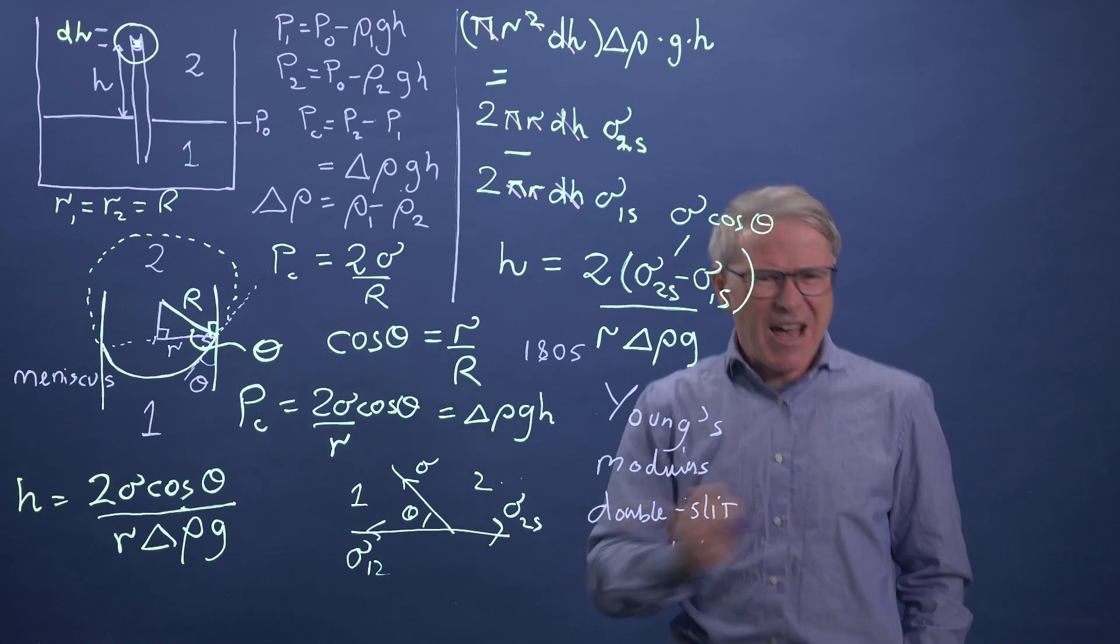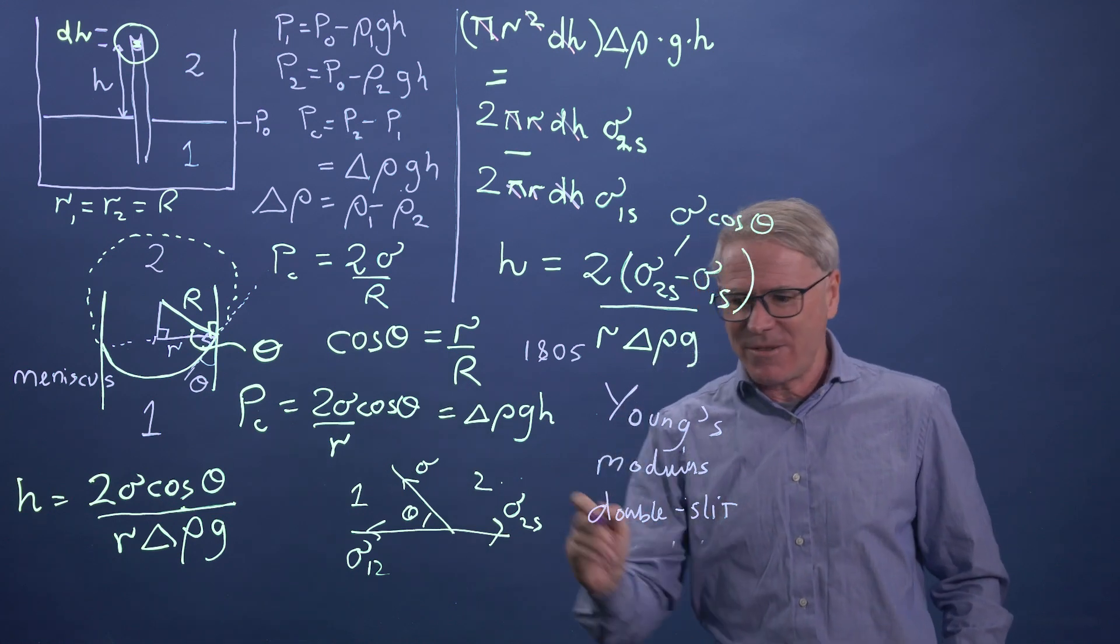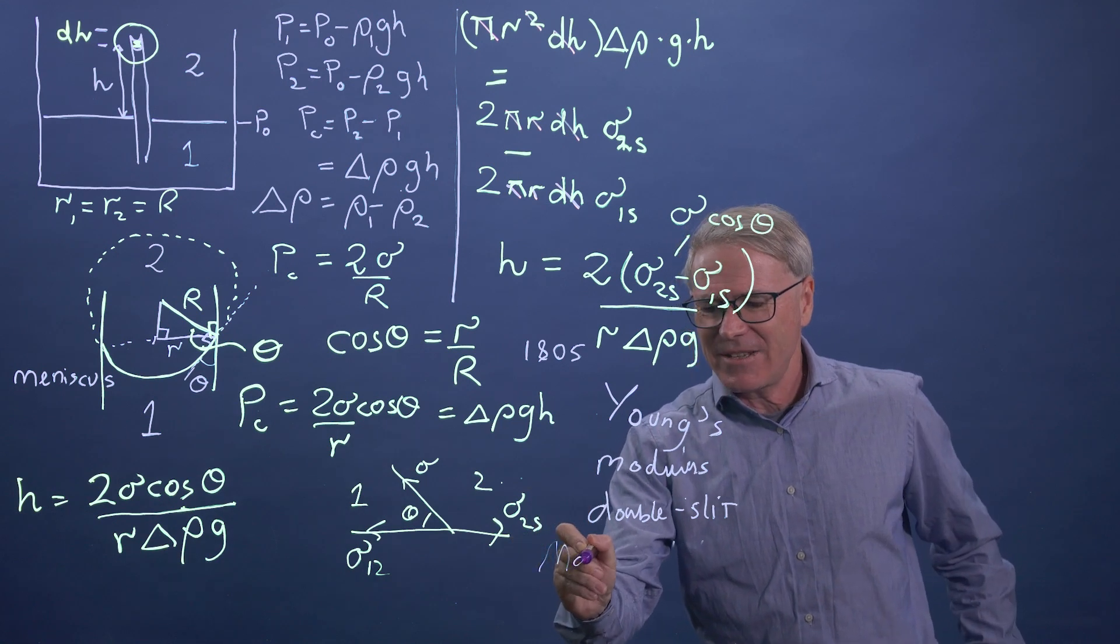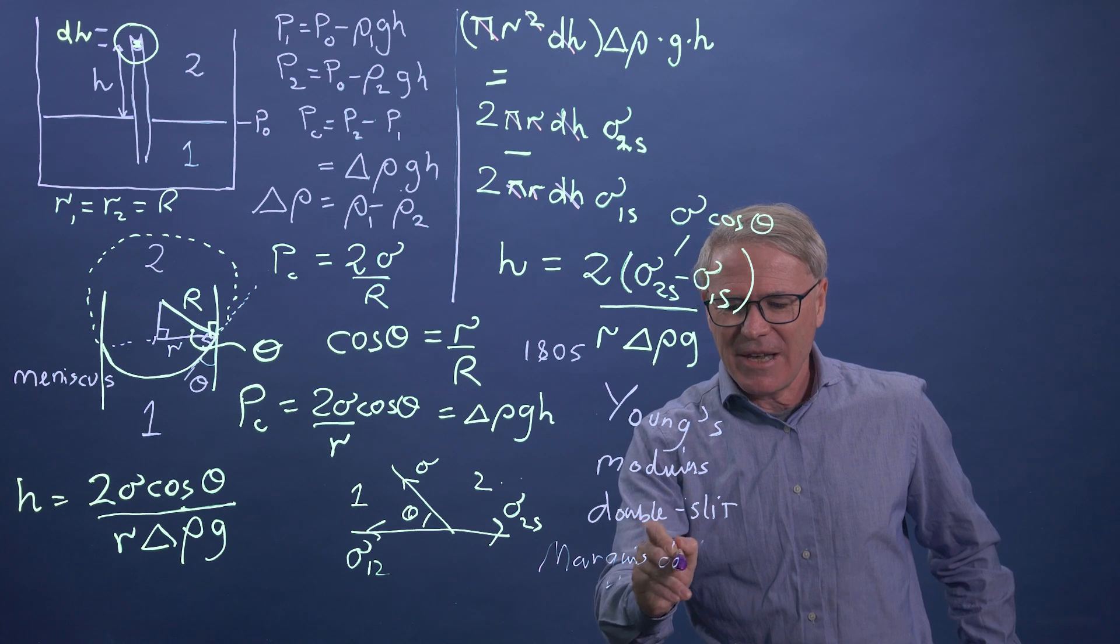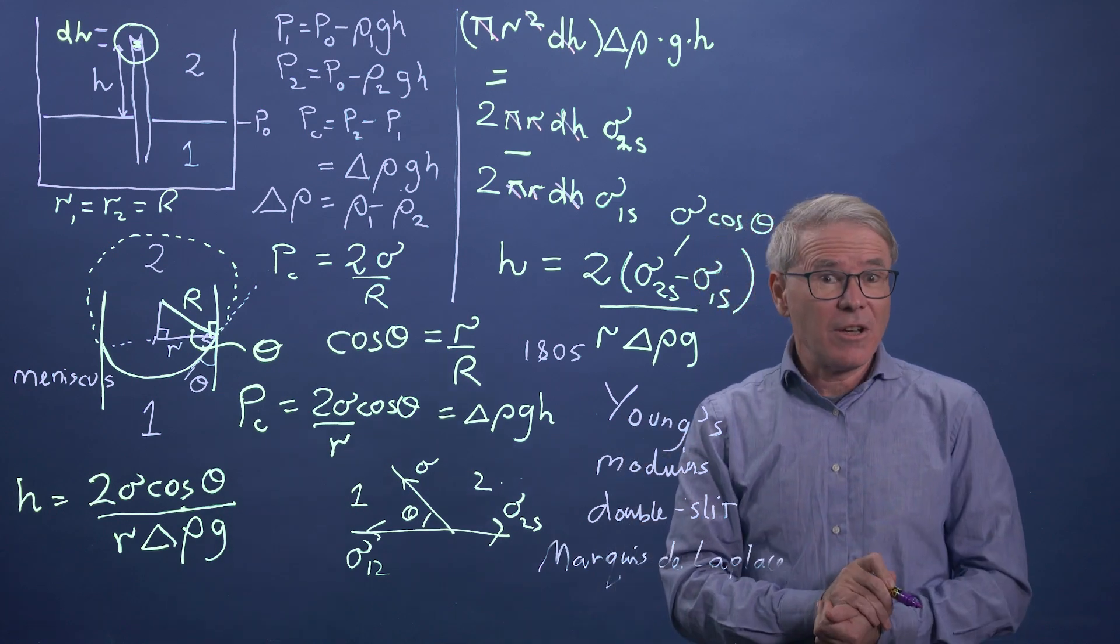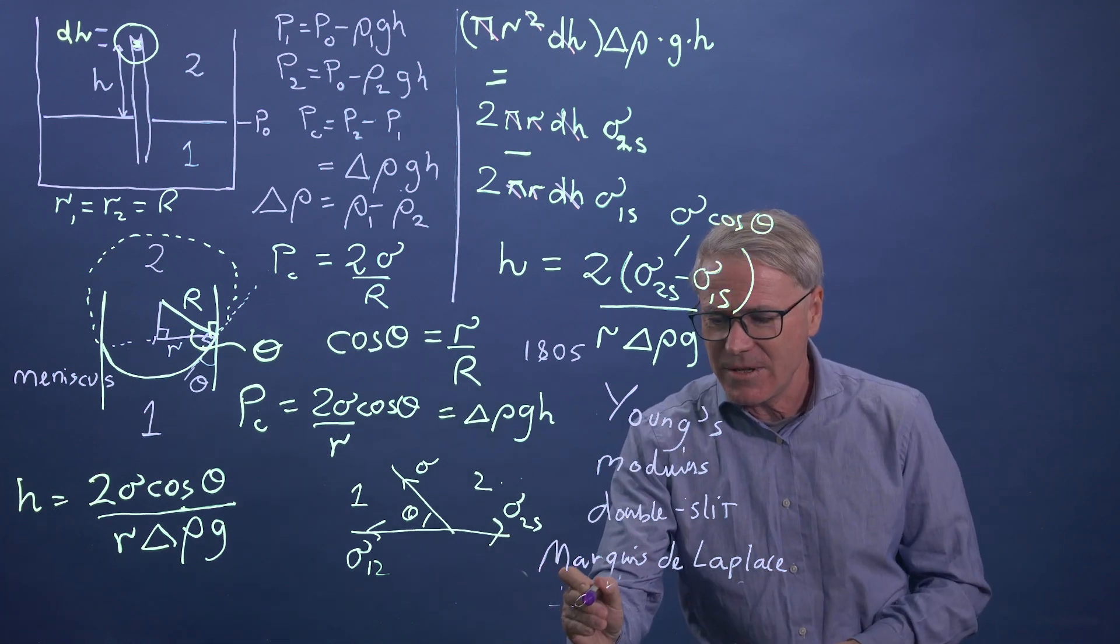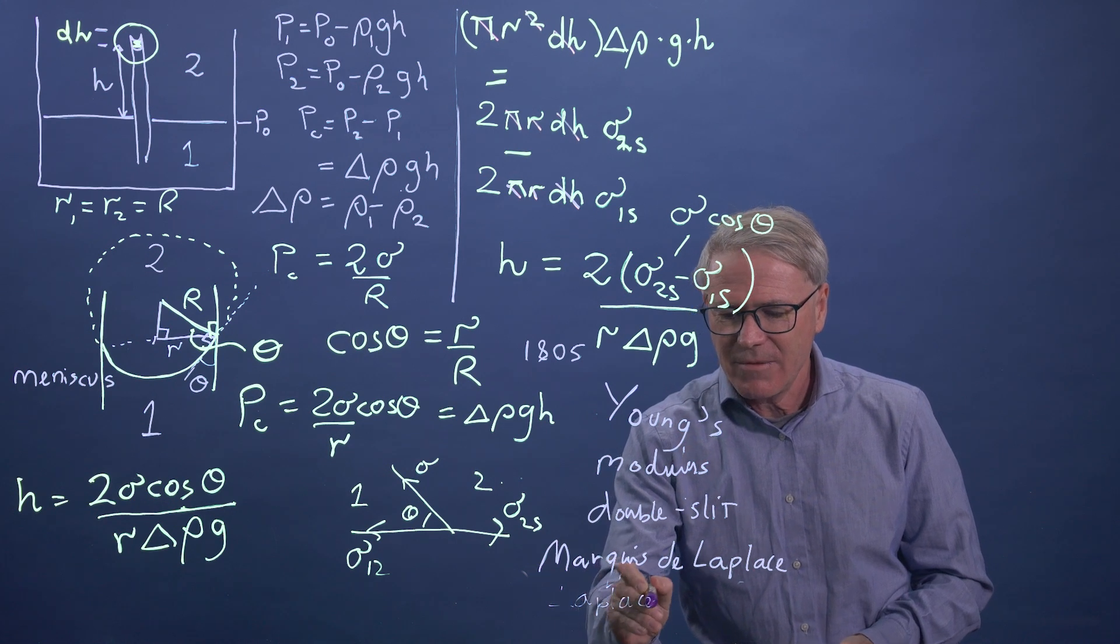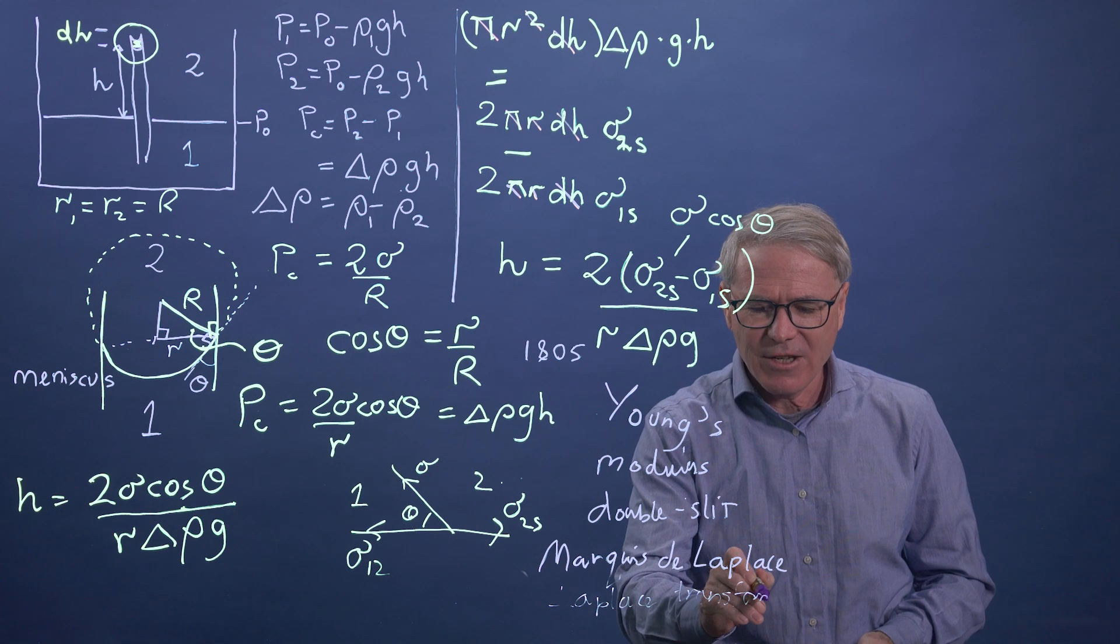But you might say, well, you've got Young and Young Laplace. You're giving too much credit to Young. Who's Laplace? Well, Laplace ended his life as the Marquis de Laplace. He was a brilliant scientist, an astronomer, and you're probably familiar with the Laplace transform, for instance, in mathematics.